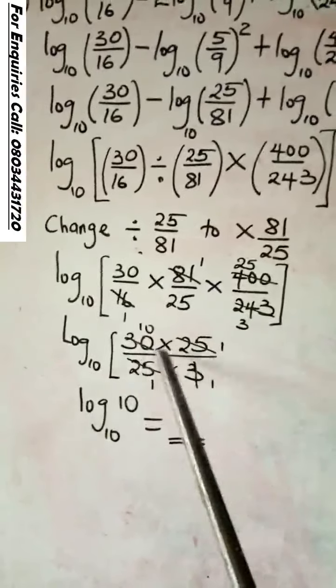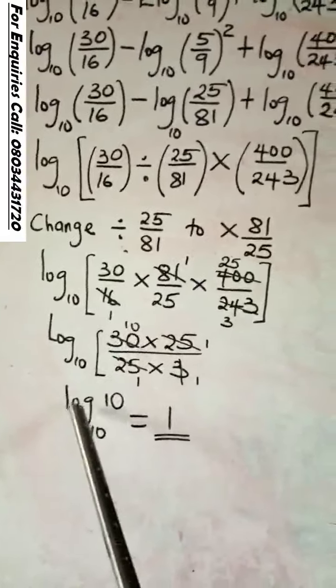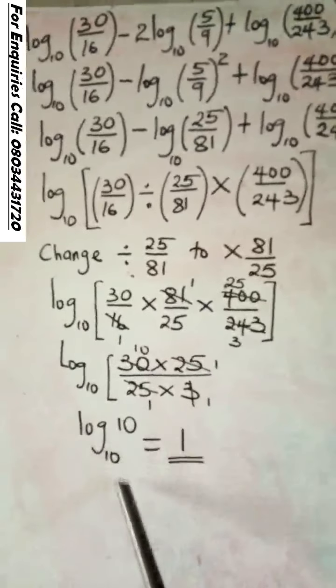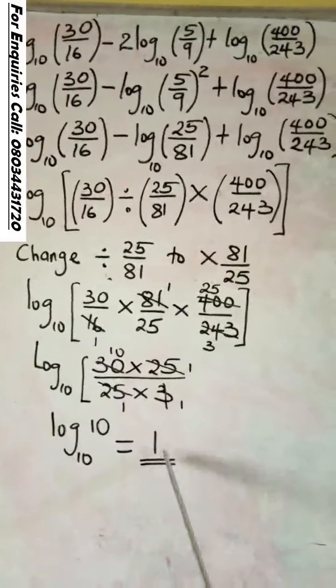25 will cancel 25. 3 will go into 30 to give you 10. That is log₁₀(10). And log₁₀(10) from our log is 1.